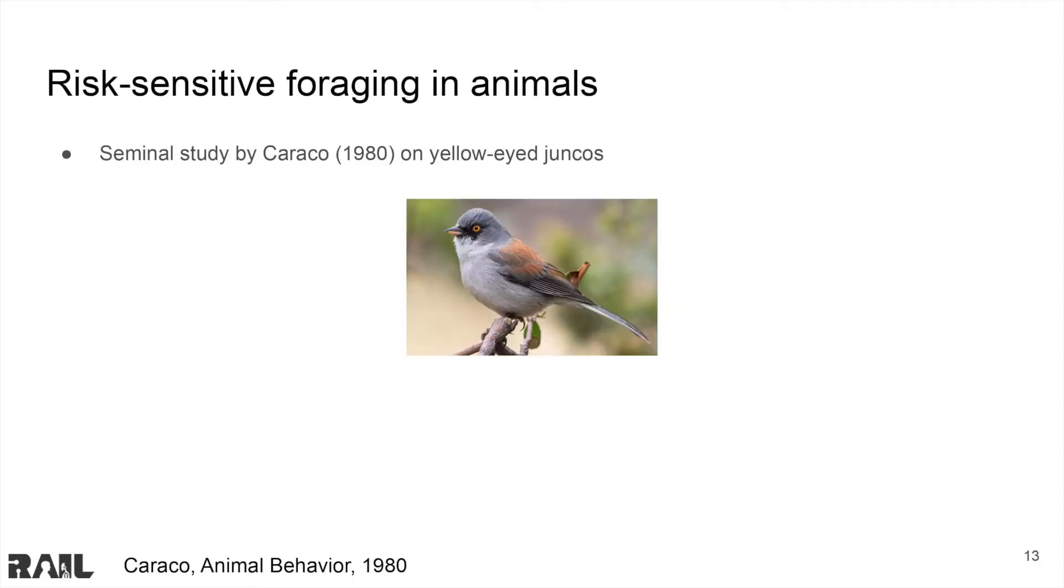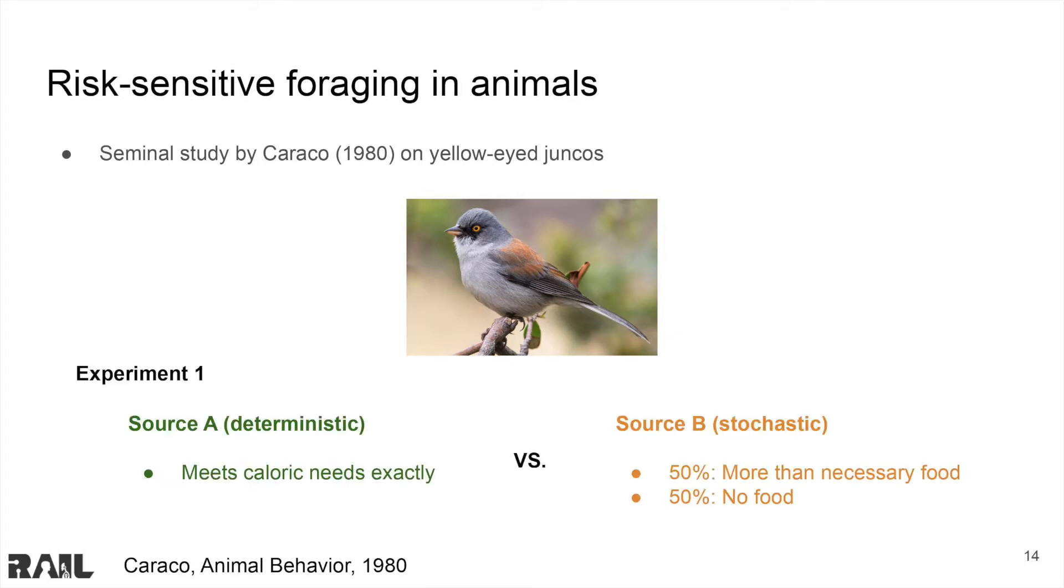A study on the foraging behaviors in birds inspires us to treat risk differently than previous methods. In one experiment, birds had access to two sources of food, one that could consistently meet their needs, and another that could exceed their needs but only 50% of the time. In this case, the birds chose the consistent source of food.